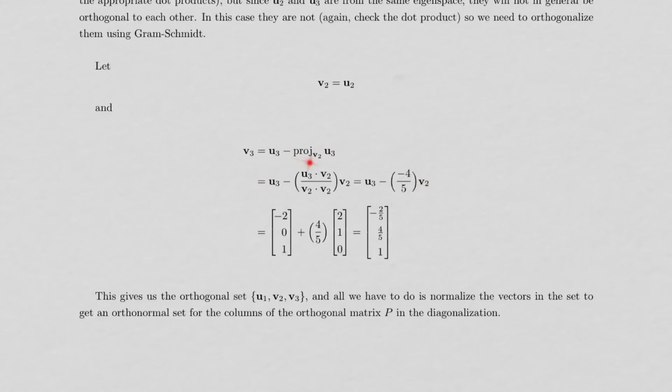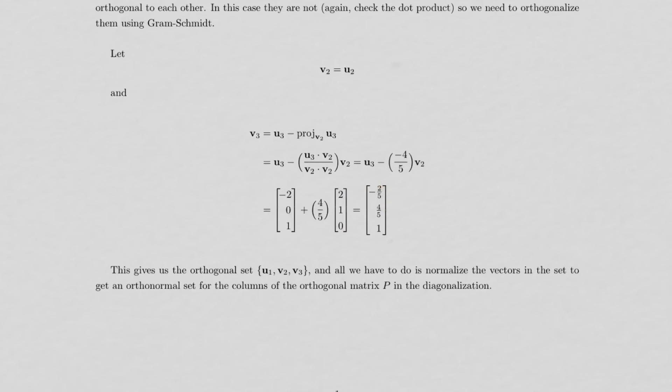Here's the corresponding equations. U3 dot V2 is minus 4, V2 dot V2 is 5. I skipped those steps just for the sake of time here. Do the arithmetic here. Here's our vector V3. And now this set, U1, V2, and V3, is an orthogonal set.